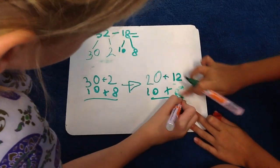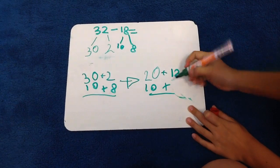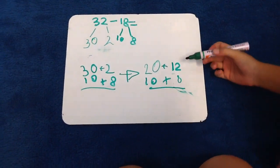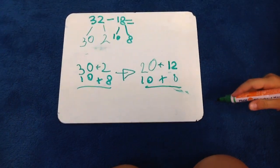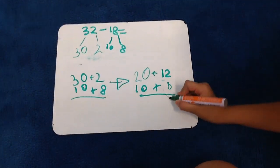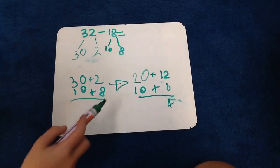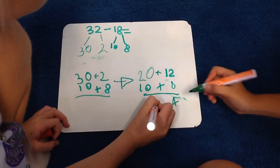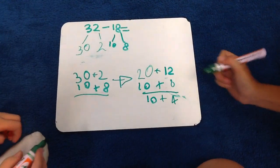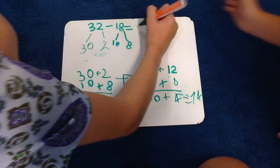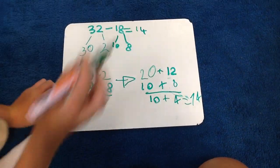Now we subtract. 12 minus 8 equals 4, so we write 4 underneath. Then 20 take away 10 equals 10. We combine them together and that equals 14. So our answer is 14.